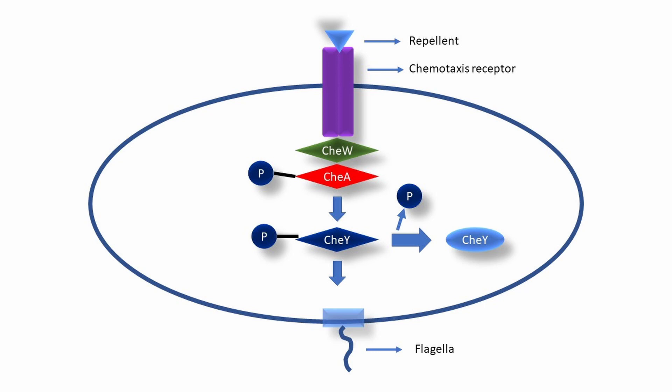The phosphorylated CheY dissociates from the receptor and diffuses through the cytosol, then binds to the flagellar motor and causes it to rotate clockwise. The resulting behavior is tumbling. The phosphorylated state of CheY persists for only a few seconds.